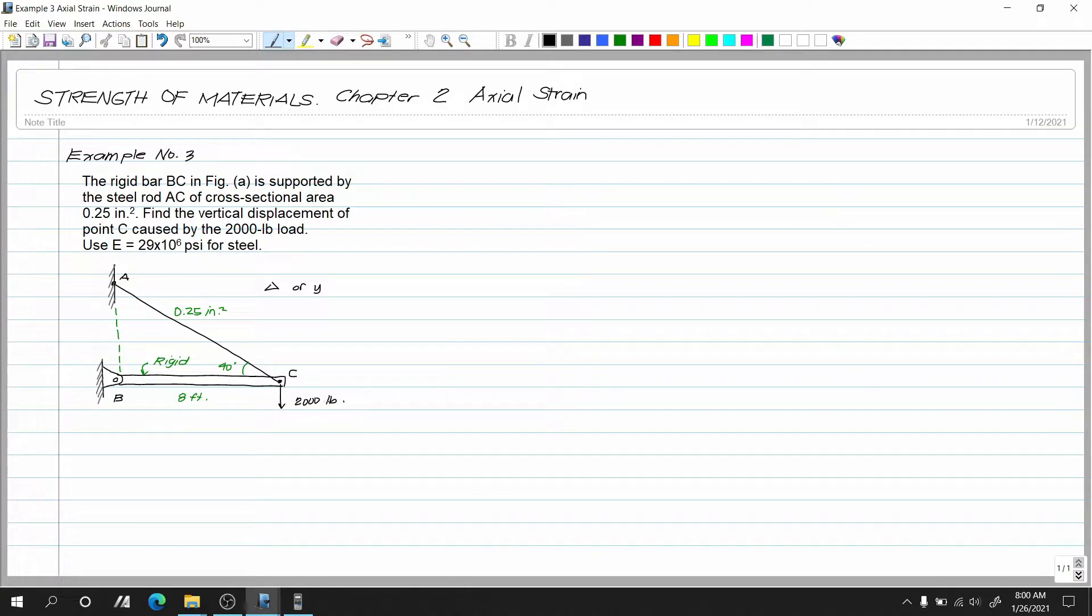So ano daw yung displacement natin na makakuha? Kasi apply natin ito ng 2,000 pounds. So mangyari, si BC, gaganto siya. Bababa siya na pag ganyan. Pero kailangan natin muna malaman kung ano yung meron na actual force sa ating cable. Kasi ang ating cable, kapag in-apply natin ito ng 2,000 pounds, bababa siya, yung cable natin may hila. Ibig sabihin yung ating cable mag-elongate.